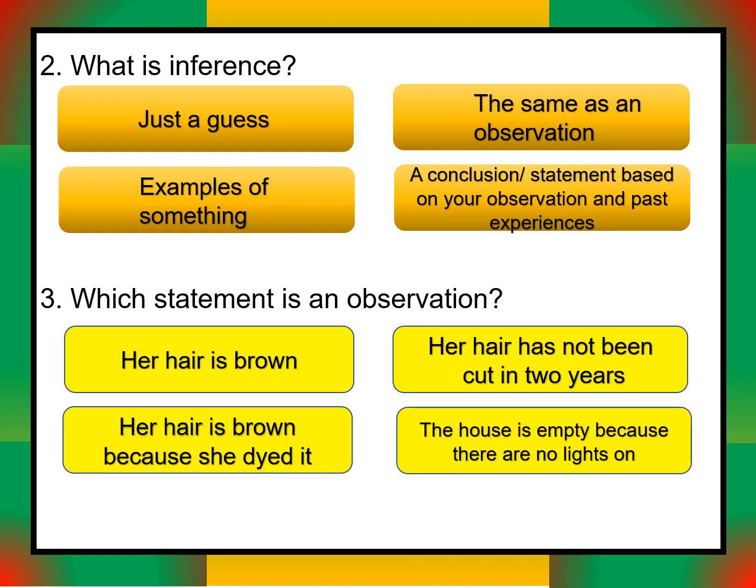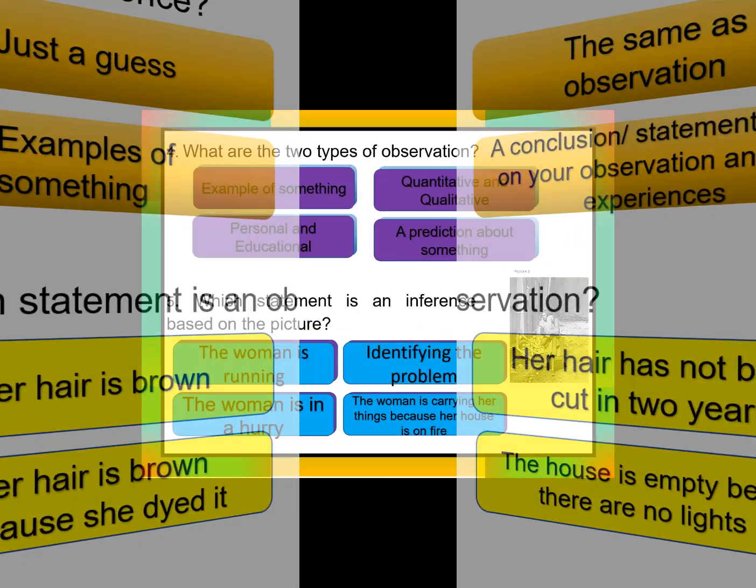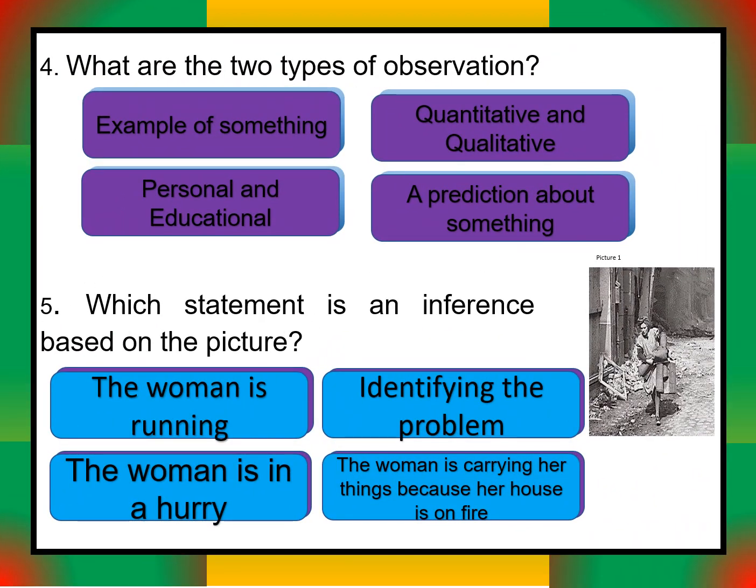Number three: which statement is an observation? Options include: her hair is brown; her hair is brown because she dyed it; her hair has not been cut in two years; the house is empty because there are no lights on. Number four: what are the two types of observation — quantitative and qualitative, or personal and educational?